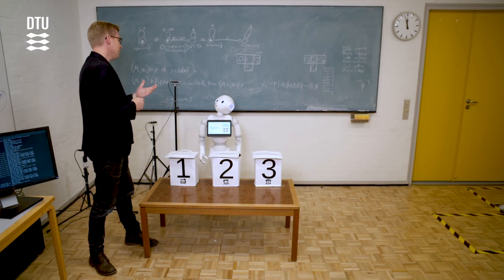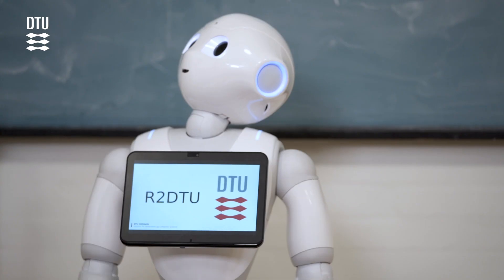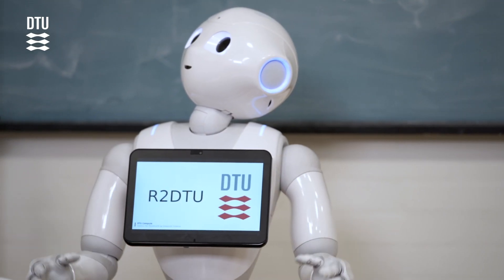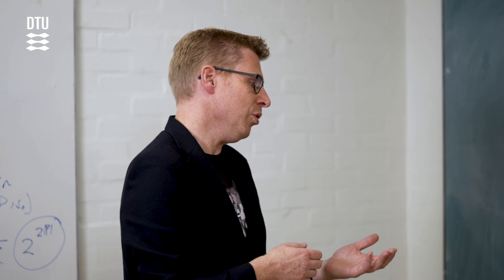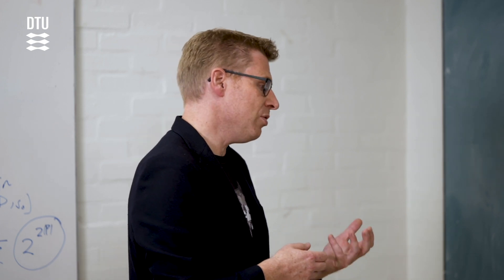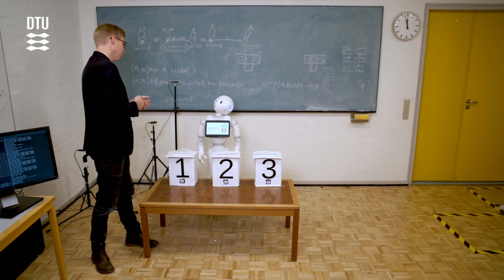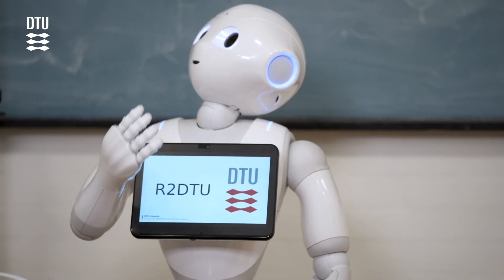R2DTU, where is the red cube? The red cube is in box two. R2DTU, where does Lasse believe the red cube to be? Lasse believes that the red cube is in box one.